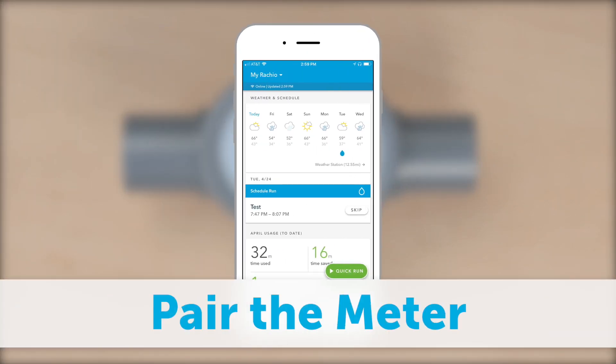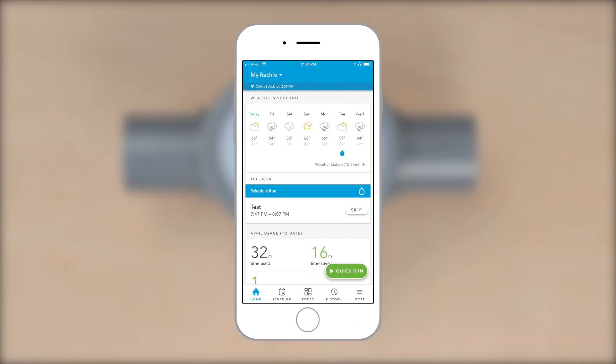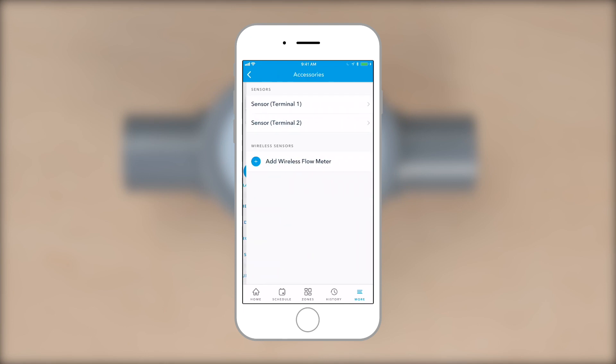Before installing the batteries, launch the Rachio app, then select More, Accessories, Add Wireless Flow Meter.